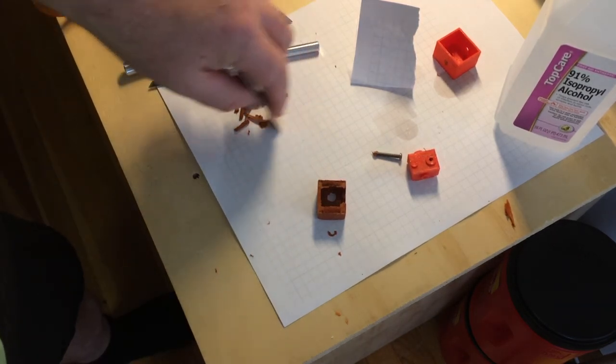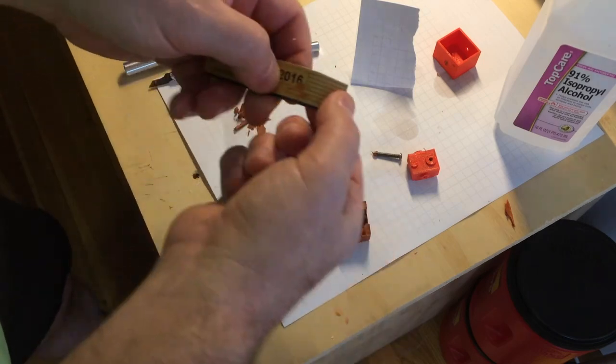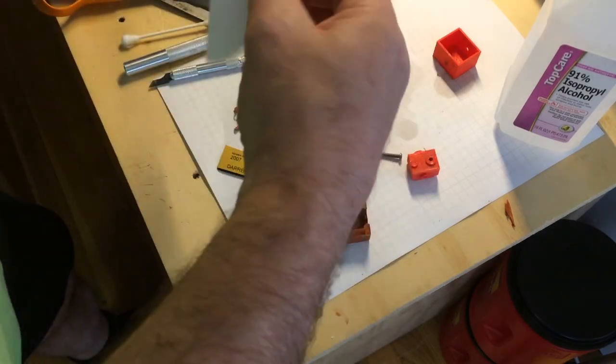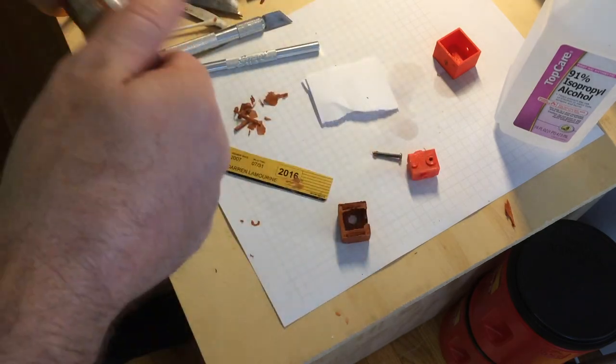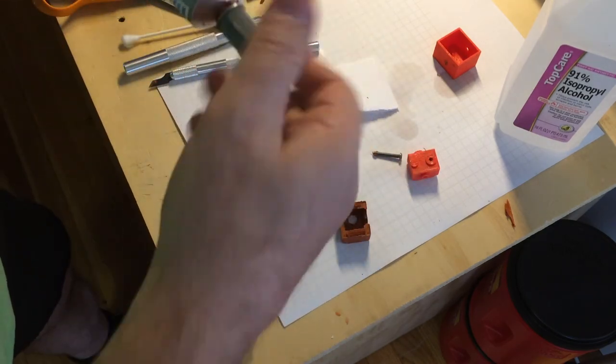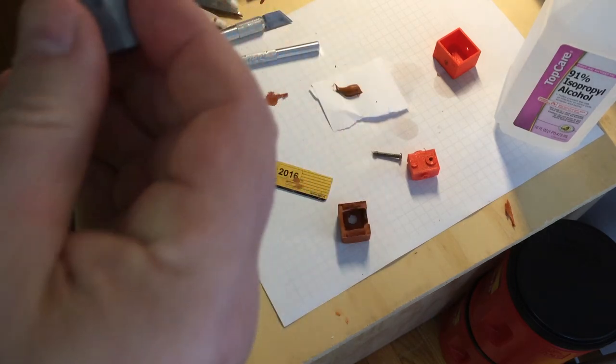Or you can use a spatula or something, a little knife, whatever. But it's nice to have some flexibility. And just squirt a little puddle of the caulk/gasket maker/silicone, whatever you want to call it. You don't need a whole lot.